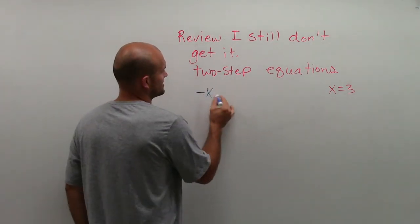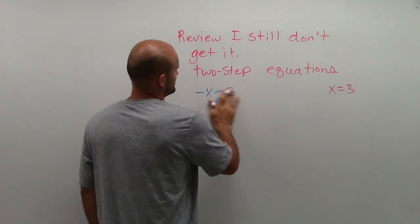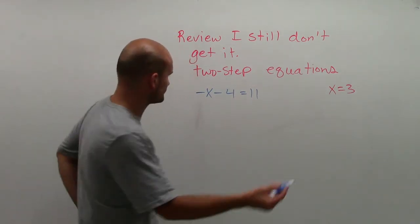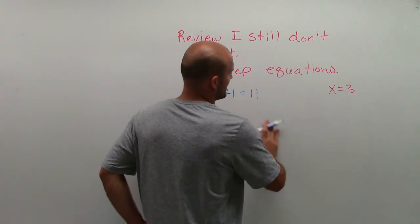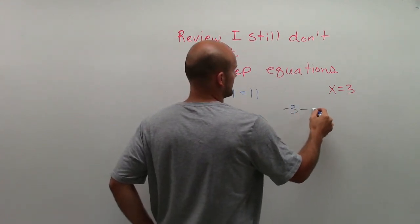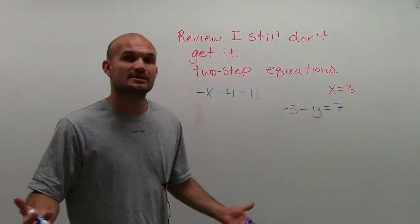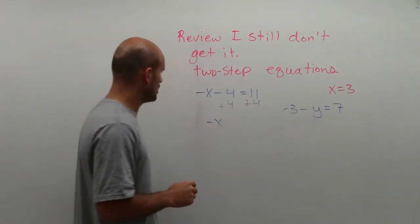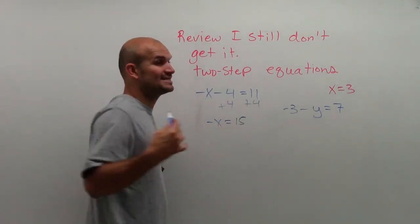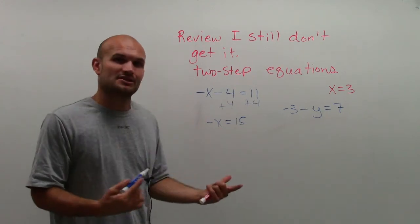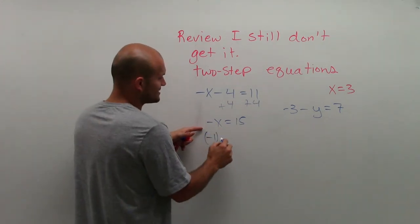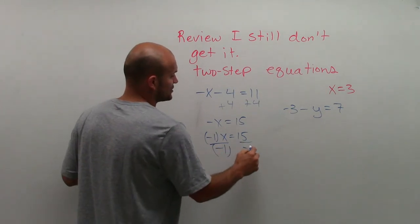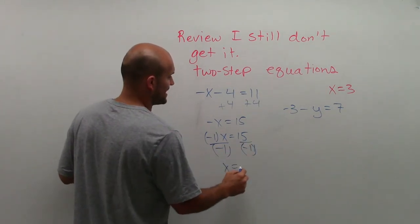Students mostly get mixed up on problems like: something minus 4 equals 11, or negative 3 minus y equals 7. They know they're subtracting 4, so they add 4 on both sides — but then they get negative x equals 15 and either stop or forget what that negative x means. Remember, negative x is the same as negative 1 times x equals 15. The next operation is being multiplied by negative 1, so to undo that you divide — making the answer x equals negative 15.